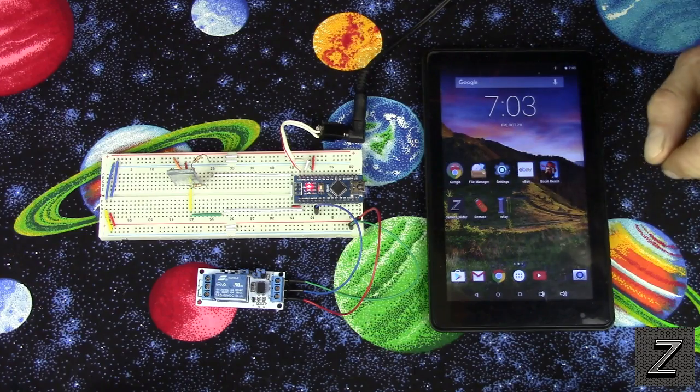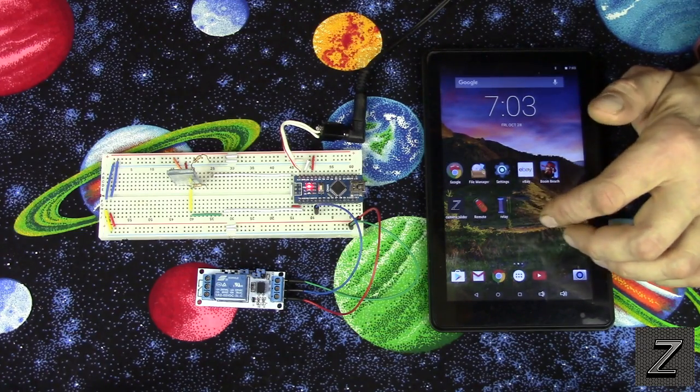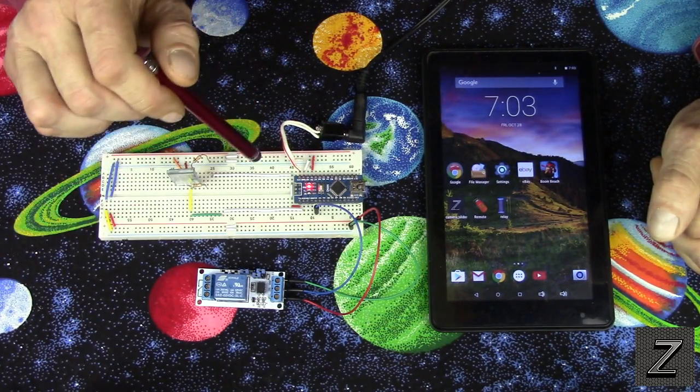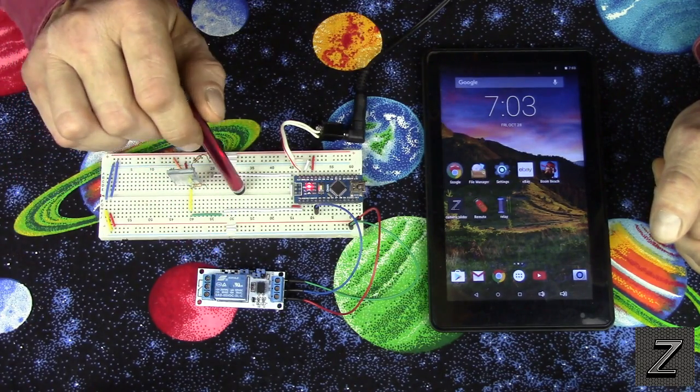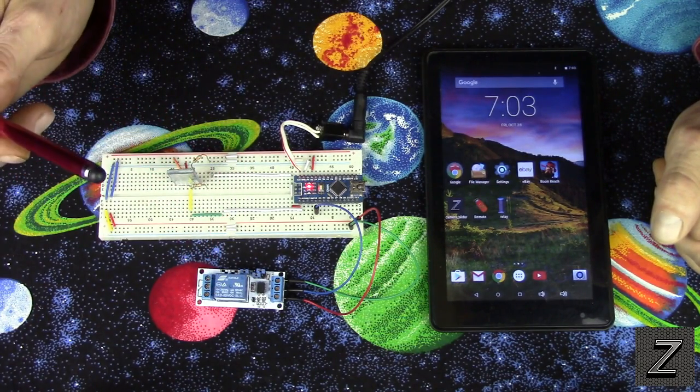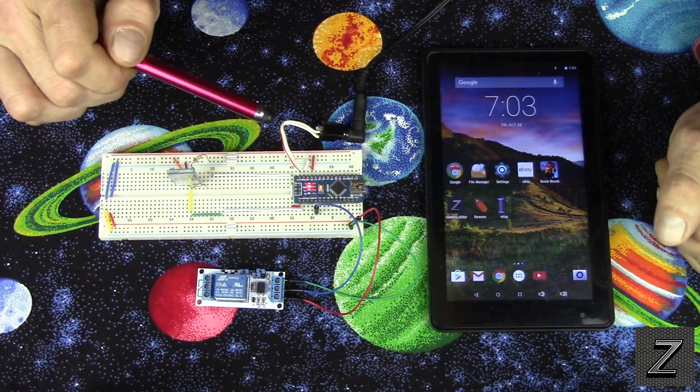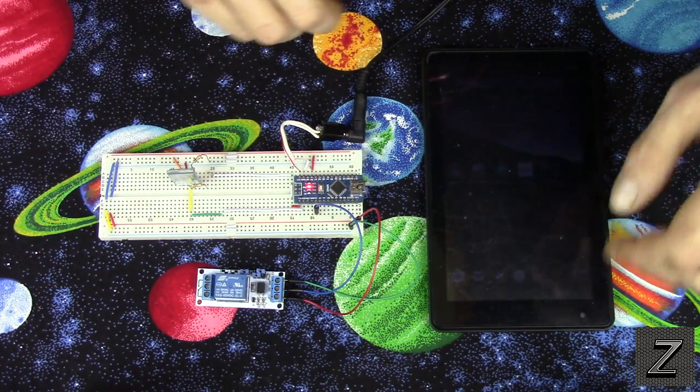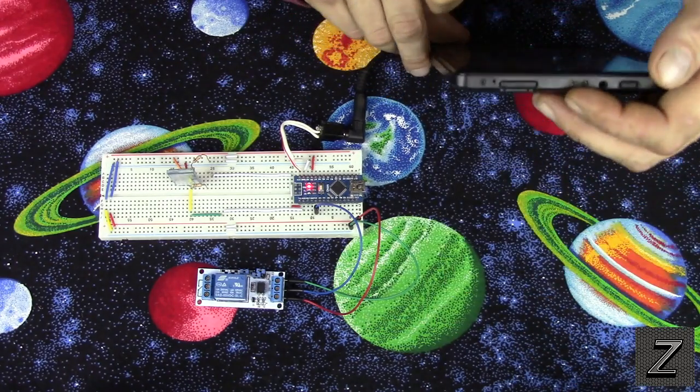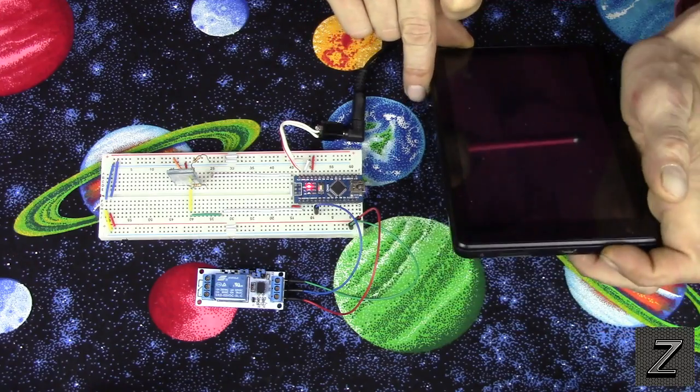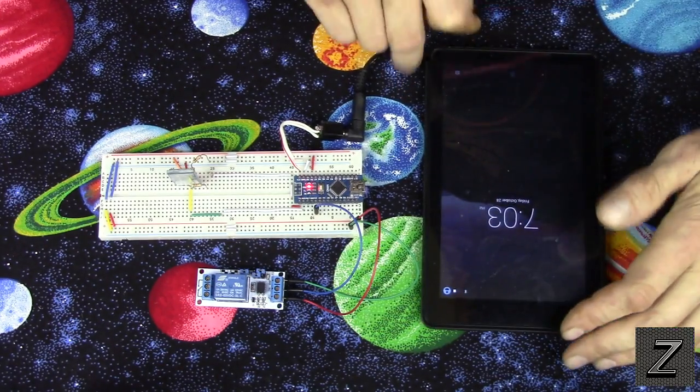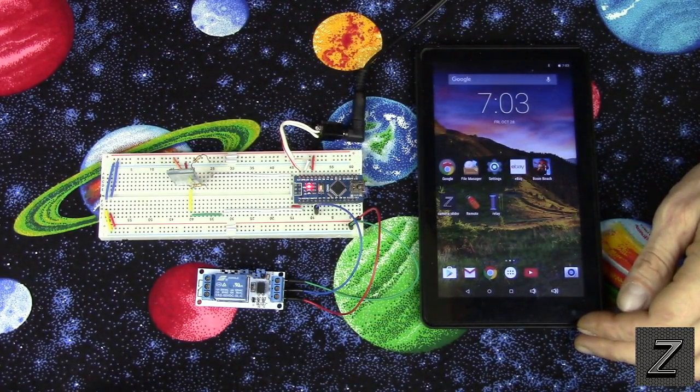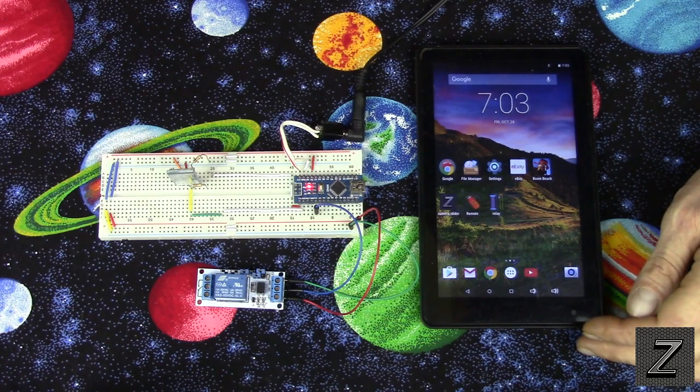Alright, now for the app, and also for the schematic on how to hook up the Bluetooth module to your Arduino board and connect the relays, just go to my website, and that's in the description below. I wrote this app myself, it's free. This will control up to 12 relays.